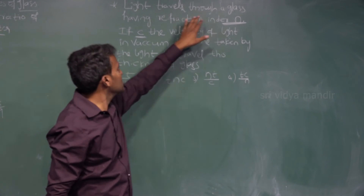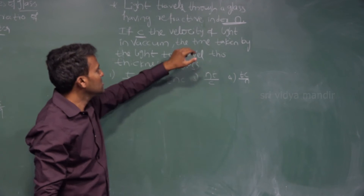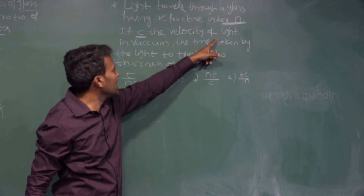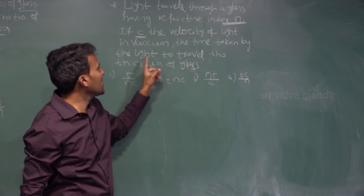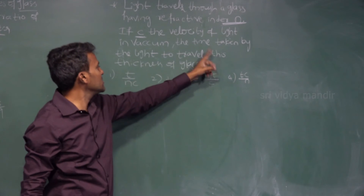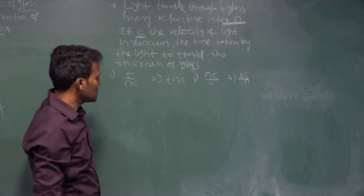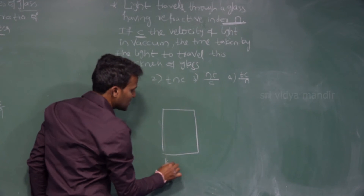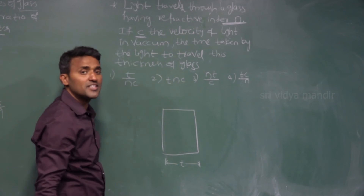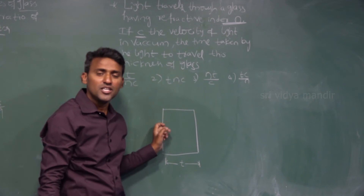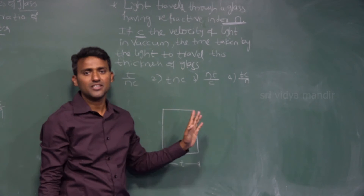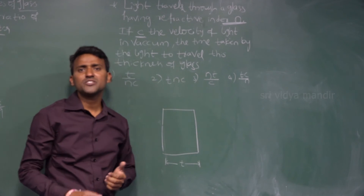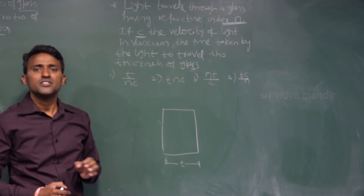Next problem: light travels through a glass having refractive index N. If C is the velocity of light in vacuum, we need to find the time taken by the light to travel through a thickness T of the glass. Since light is traveling some distance, we use: time equals distance divided by speed.